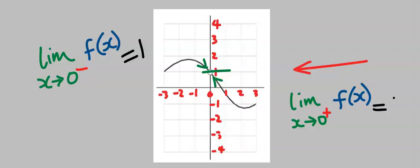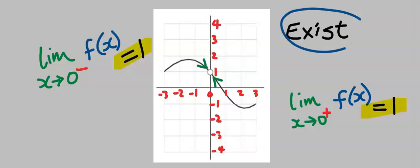The limit approach from the left is one, and the limit approach from the right is one. Hence from the graph, this limit exists. Hence we say as the limit tends to zero, f exists.